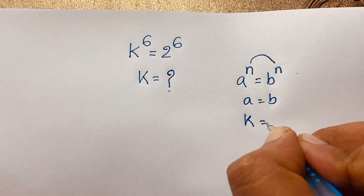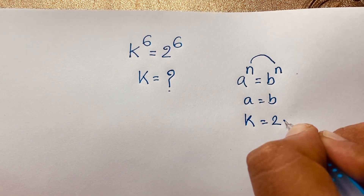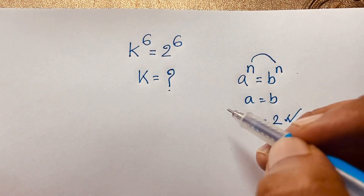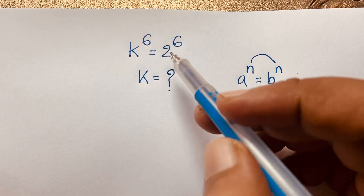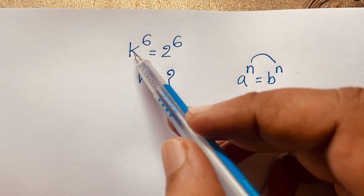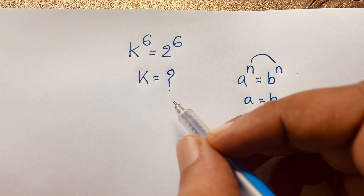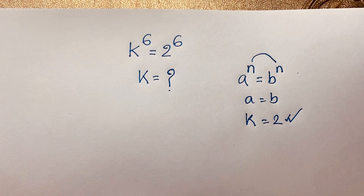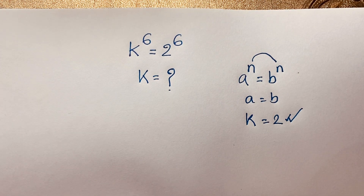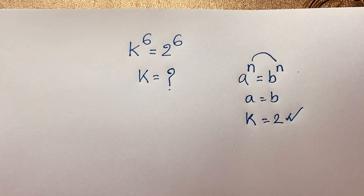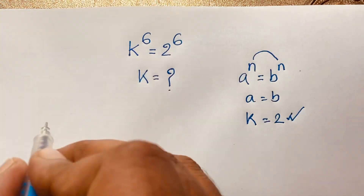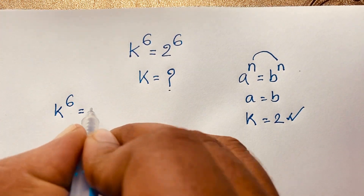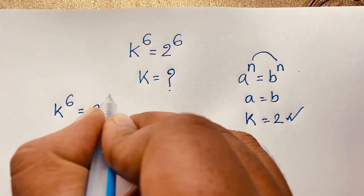So our final answer is k is equal to 2. But in this maths problem, we'll find out all 6 roots because here k is to the power 6. So let's start. Our question: k to the power 6 is equal to 2 to the power 6.